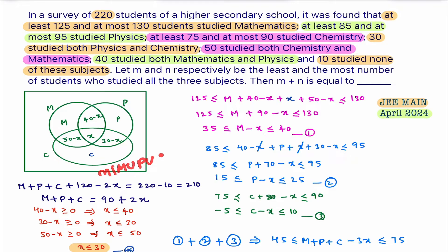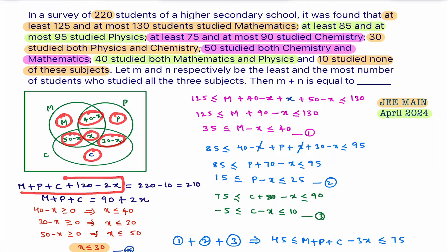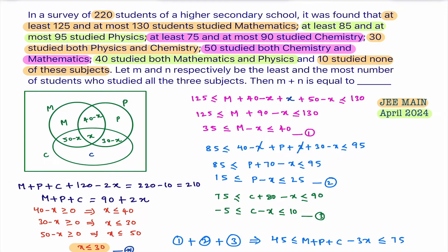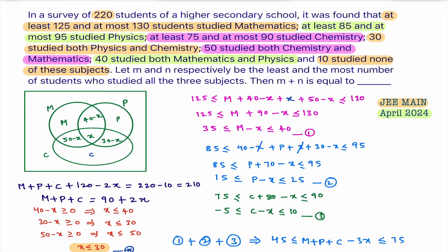Now I'll calculate n(M ∪ P ∪ C) by adding all regions. After adding all parts, 10 students study none of the three subjects out of 220 total, so n(M ∪ P ∪ C) = 210. Simplifying, I get: M + P + C = 90 + 2x.